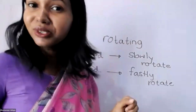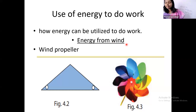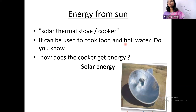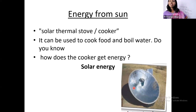By using wind we can do work — that is, we can rotate things. Not only that, we are going to learn about energy from the sun as well. The sun can be used to do our work. For that we are going to make a small solar thermal stove or cooker. We are going to cook food or boil water by using this solar thermal stove.